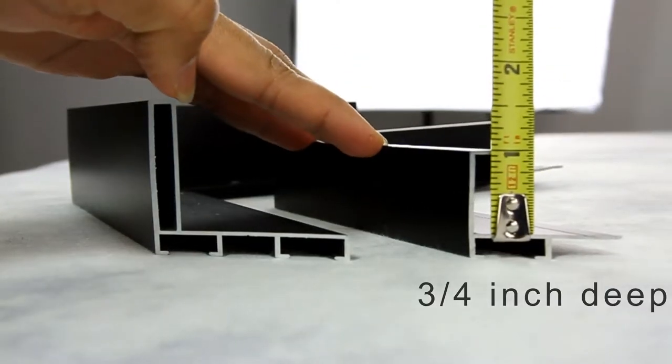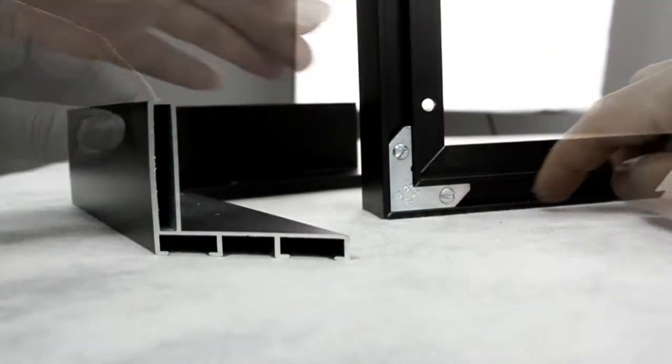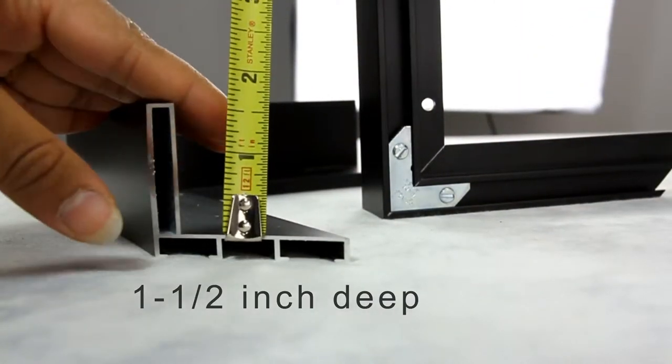Note that three-fourth inch floater frames come with one tapped corner plate and one and a half inch will come with two.